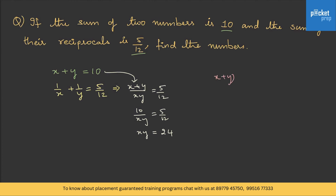Using the identity: (x + y)² - (x - y)² = 4xy, we substitute: 10² - (x - y)² = 4 × 24, which gives 100 - (x - y)² = 96. From this, (x - y)² = 4, so x - y = 2. Now we have both x + y = 10 and x - y = 2.